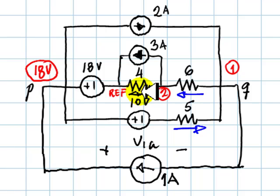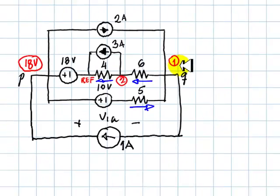Branch currents are indicated, and we are ready to write two KCL equations, one here and one there.